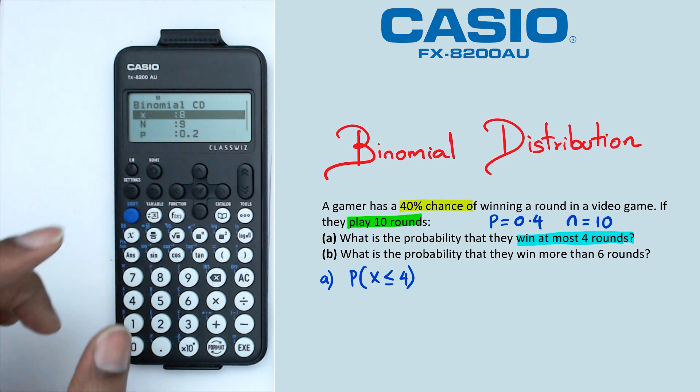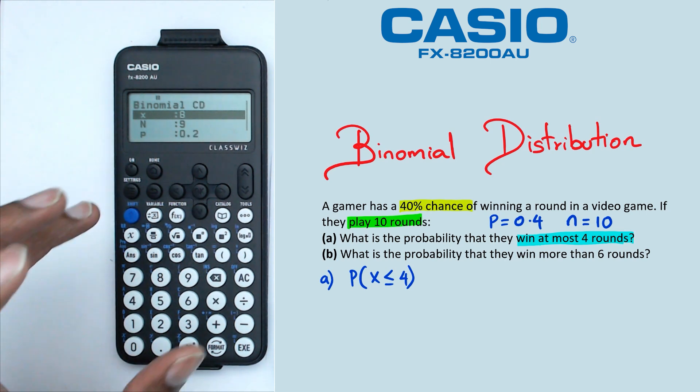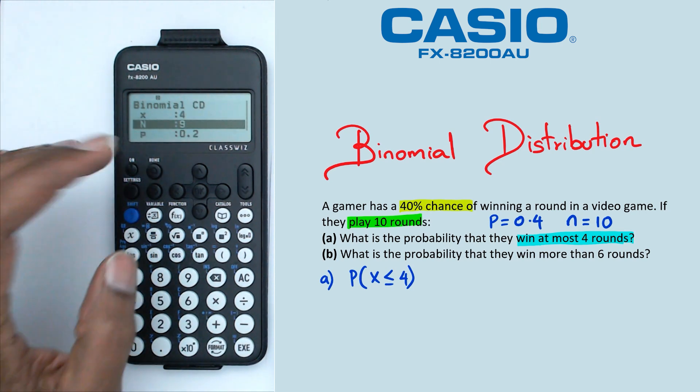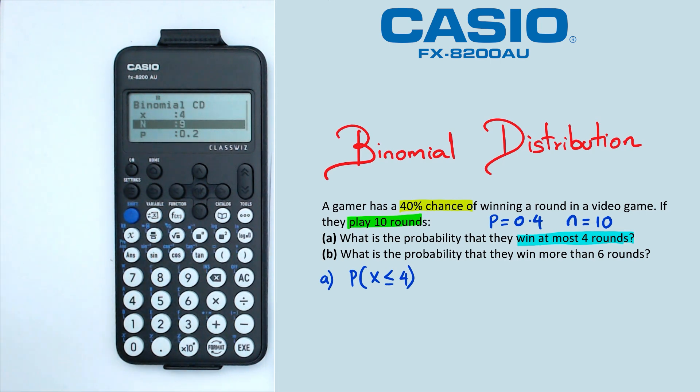Now it says x is the number that we want to put here. This is something that we need to know about binomial or even any kind of cumulative distributions on these calculators. When you put the number 4, what the calculator actually calculates is anything including 4 and under. So it's actually doing 0, 1, 2, 3 and 4.